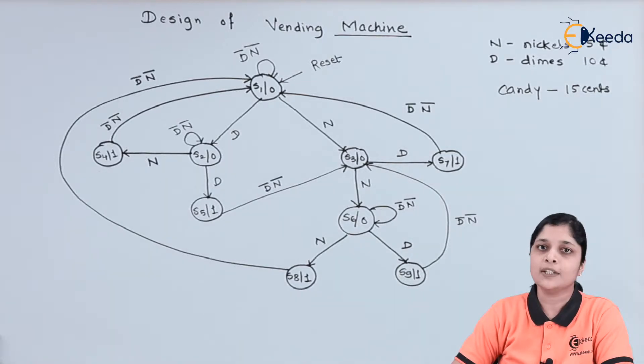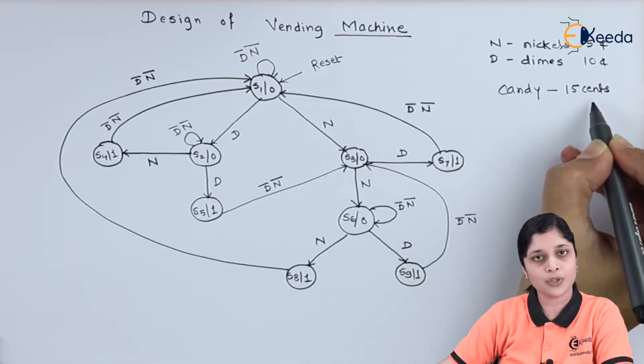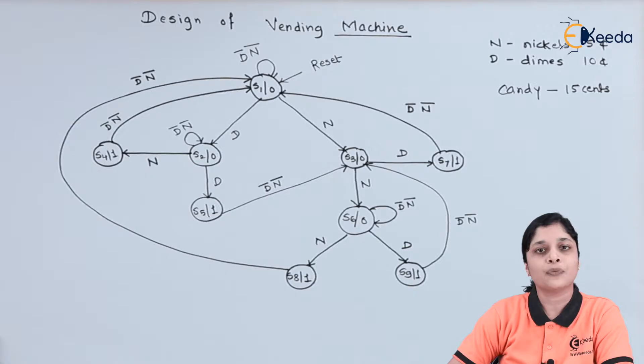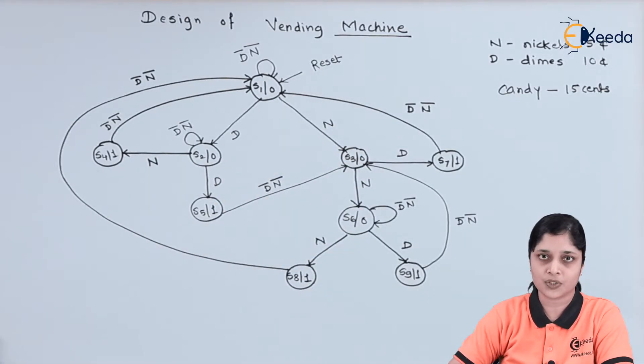If a customer deposits 20 cents, then it will take 15 cents to give us candy and it will deposit the 5 cents for the next process or it will wait for the next transaction. This is the working of vending machine.